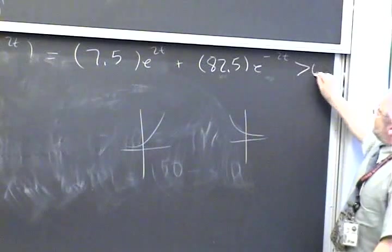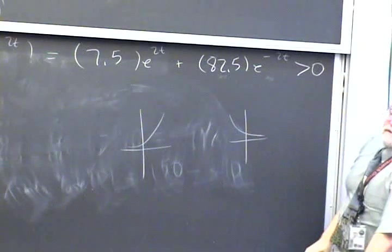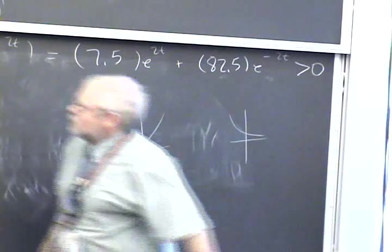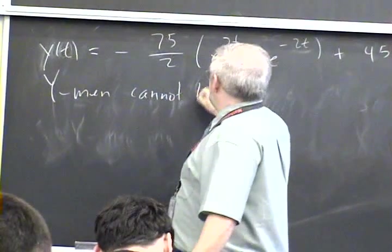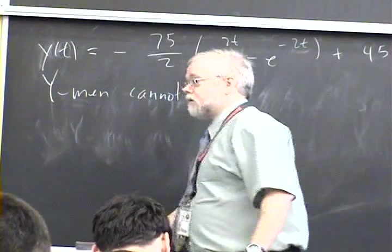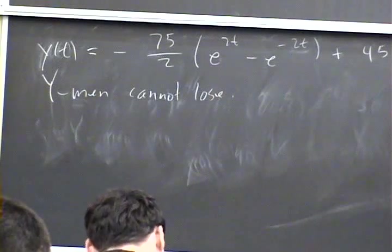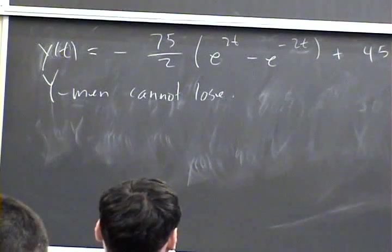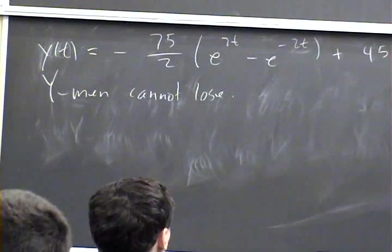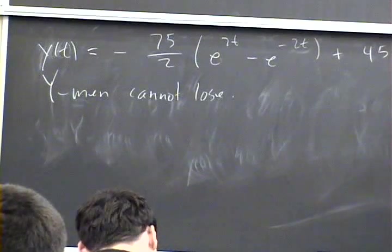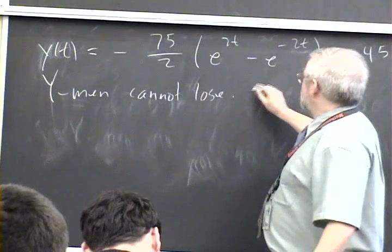So Y(t) = 7.5e^(2t) + 82.5e^(-2t). Notice that this coefficient is positive, this function is always positive - the exponential function is never below the axis. That coefficient is positive and this exponential function also is positive. So this whole thing is never zero, it's always above the axis. So the Y-men cannot lose. In fact, the Y-men will win.